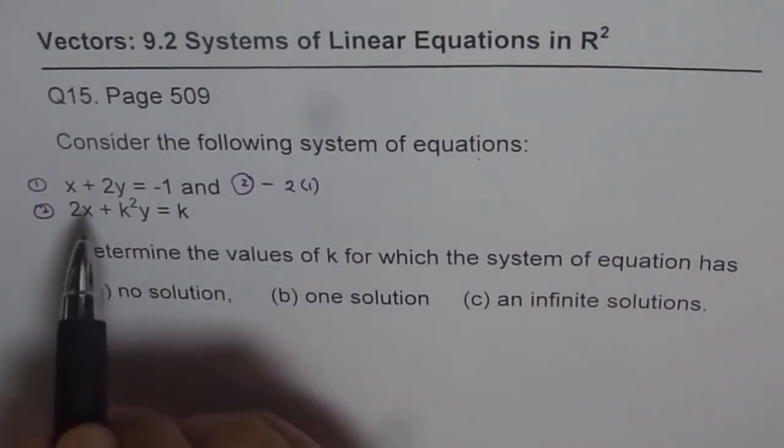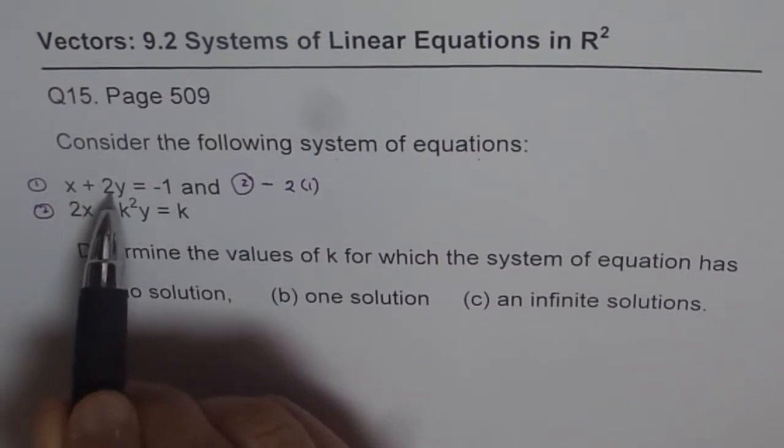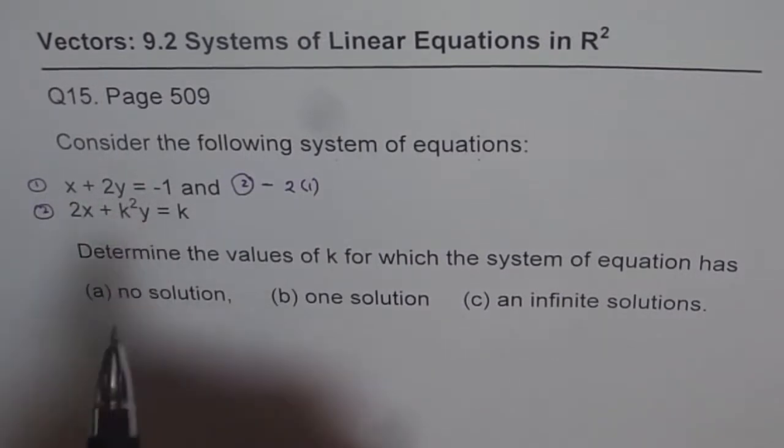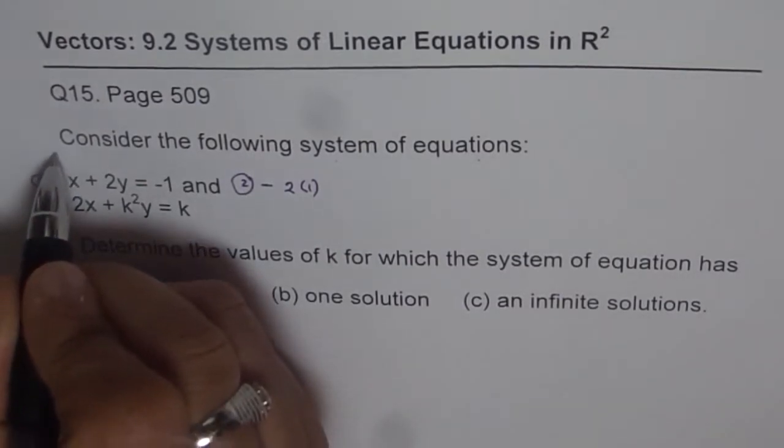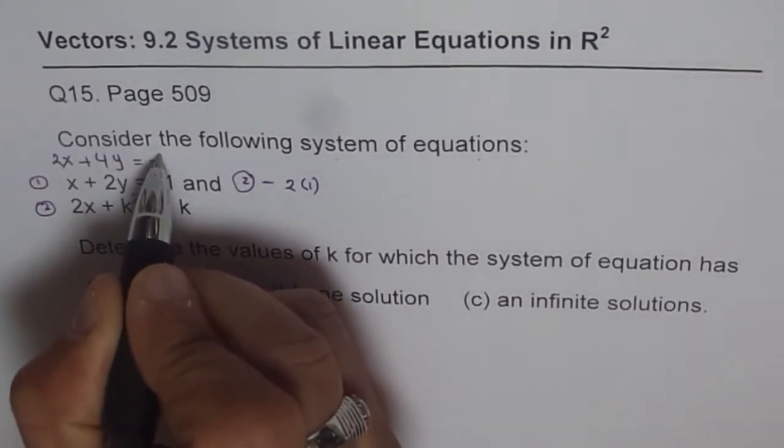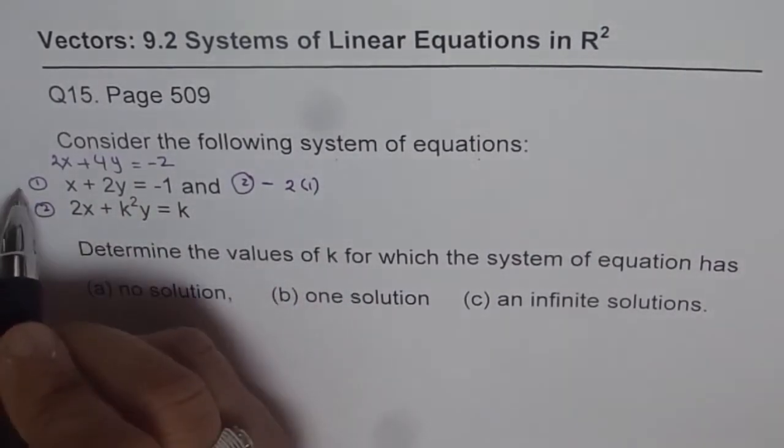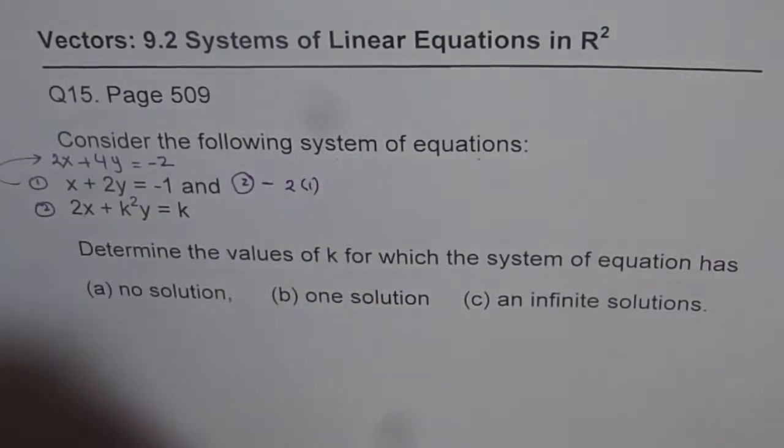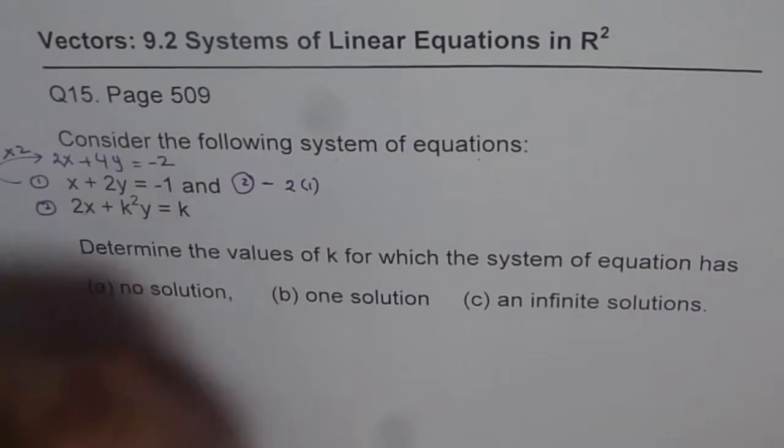So when you multiply the first equation by 2, you get 2x plus 4y equals to minus 2. Let me write down on top of this. We get 2x plus 4y equals to minus 2. This is what you get when you multiply this by 2. So when you do times 2, is it okay?